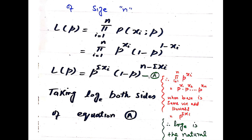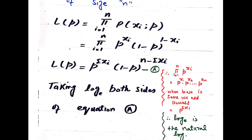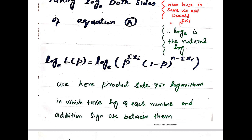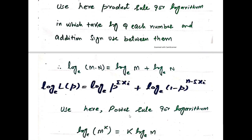We take the log of both sides of equation A. log L(p) = log[p^(Σxi) · (1 - p)^(n - Σxi)]. Using the product rule for logarithm, we take the log of each factor and add them: log L(p) = log(p^(Σxi)) + log((1 - p)^(n - Σxi)).